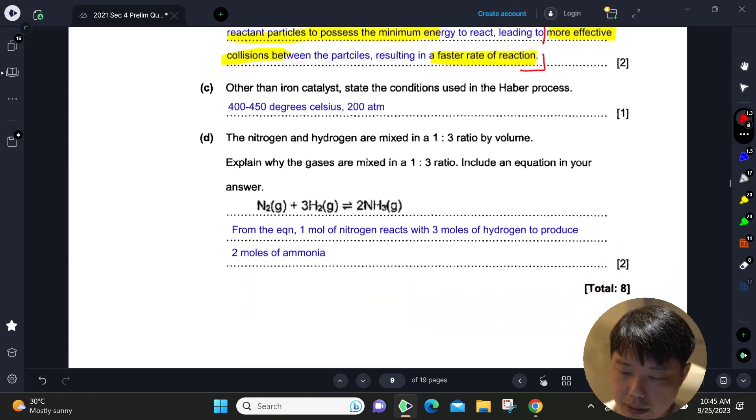Next they say explain why the gases are mixed in a 1 to 3 ratio. Obviously it's mixed in 1 to 3 because from the reaction they react in a 1 to 3 ratio. You want to mix them in stoichiometric amounts so that you get the maximum yield without any excess reactant.